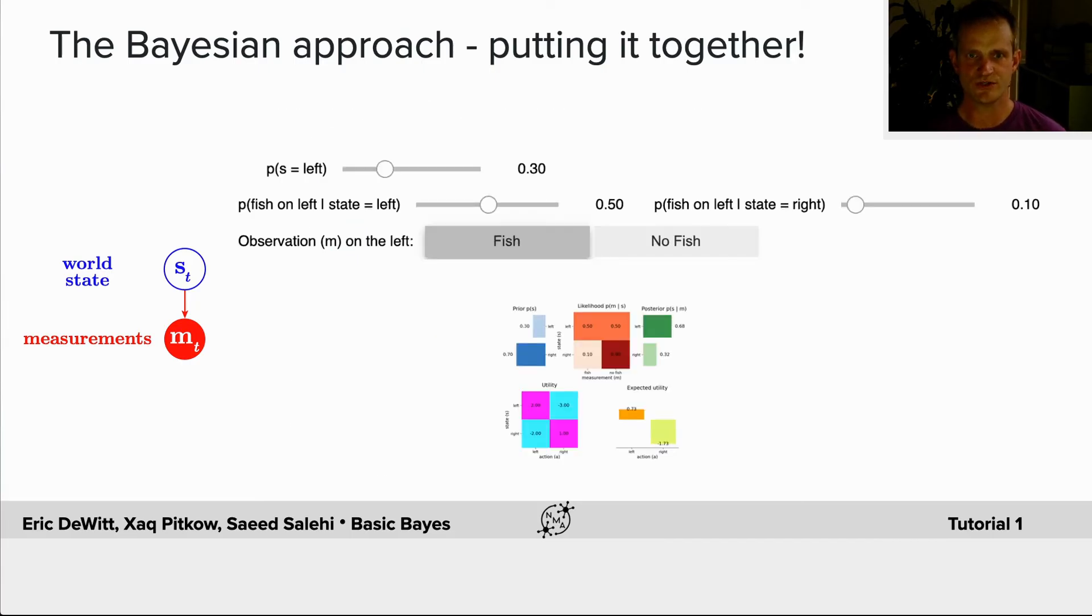You're going to use these controls which allow you to change whether you observed a fish or not, what the probability of seeing a fish given the true state, and the prior probability, all assuming you observe somebody fishing on the left. And you're going to answer some questions about this. Good luck.